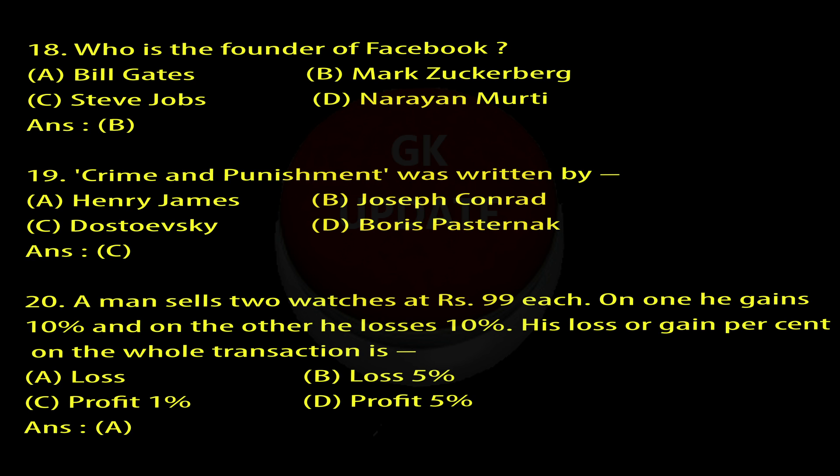Question 19: Crime and Punishment was written by: A. Henry James, B. Joseph Conrad, C. Dostoyevsky, D. Boris Pasternak. Answer: C.